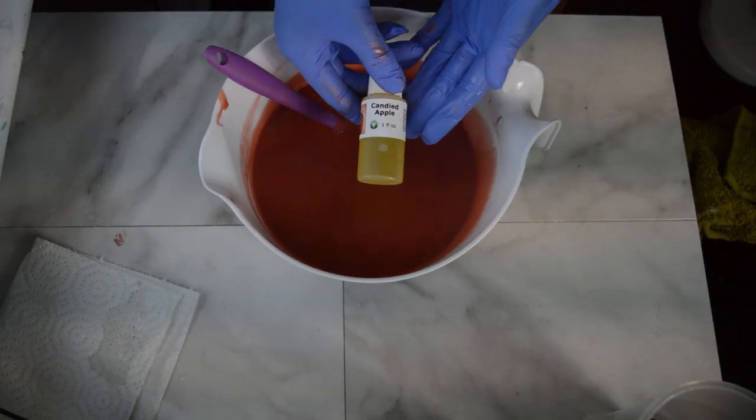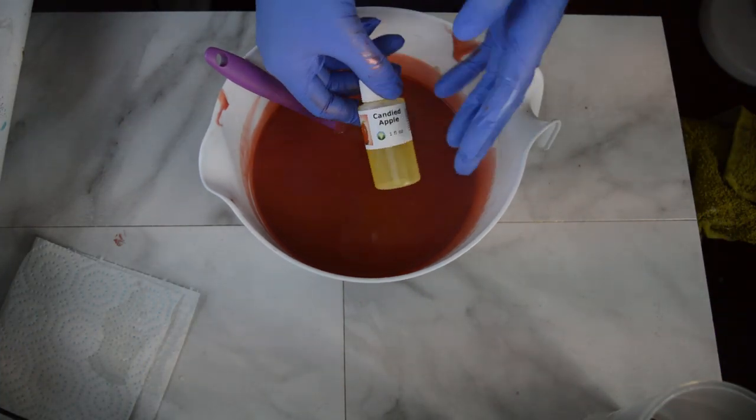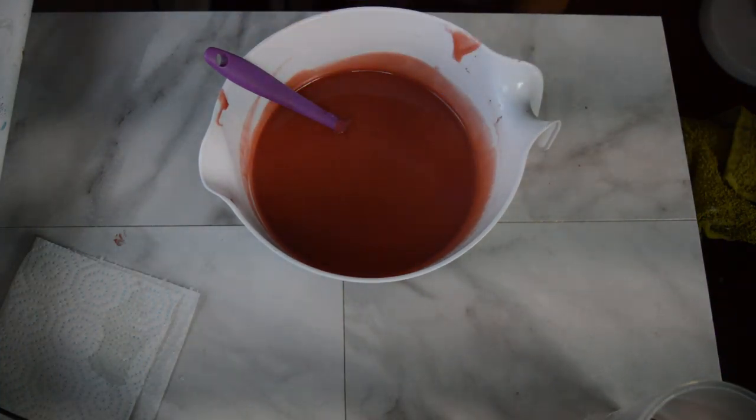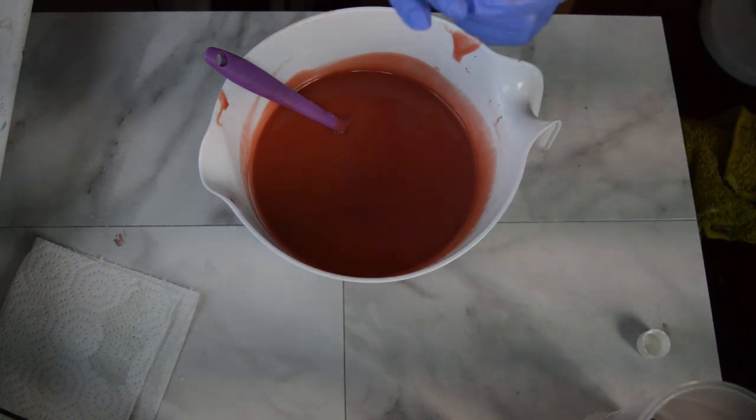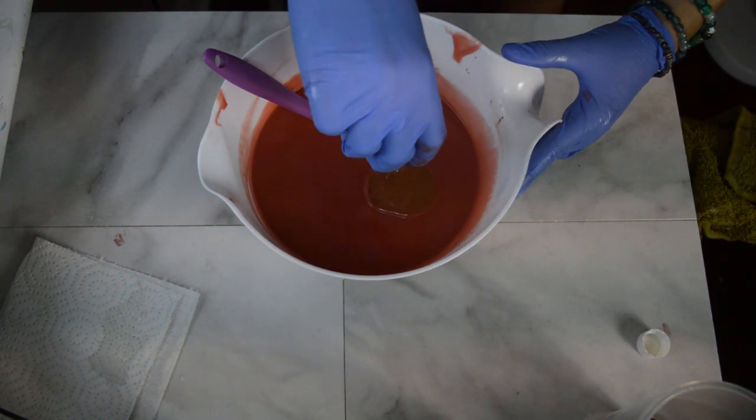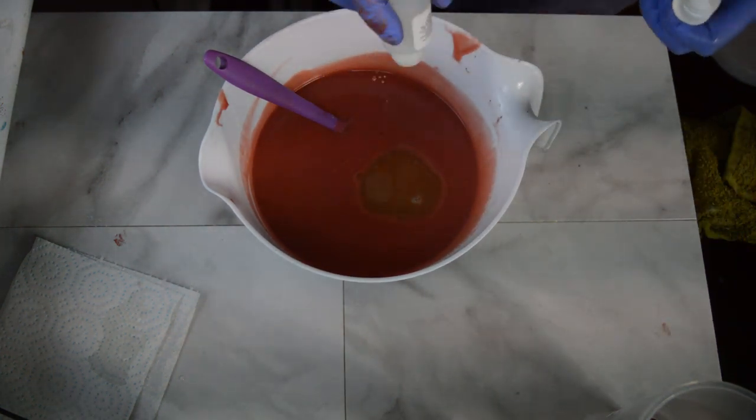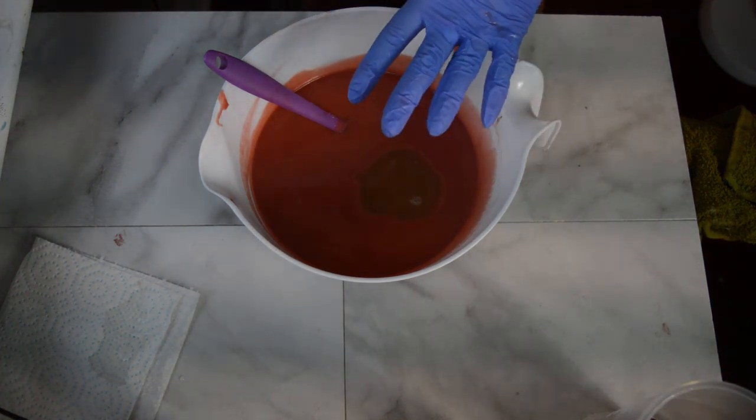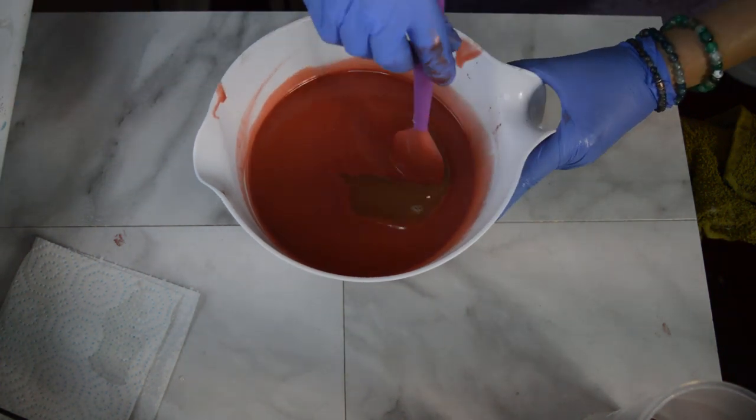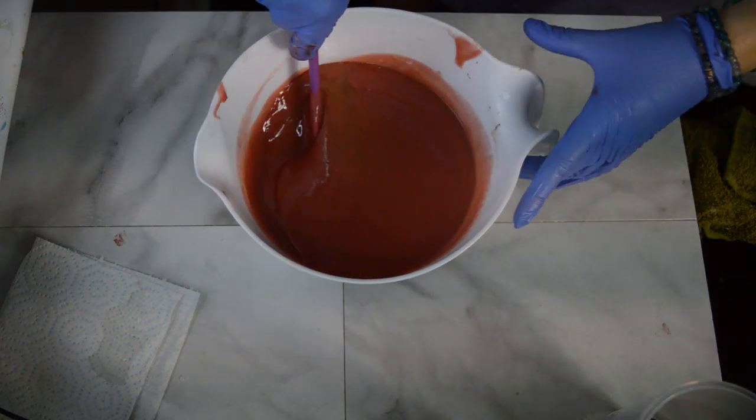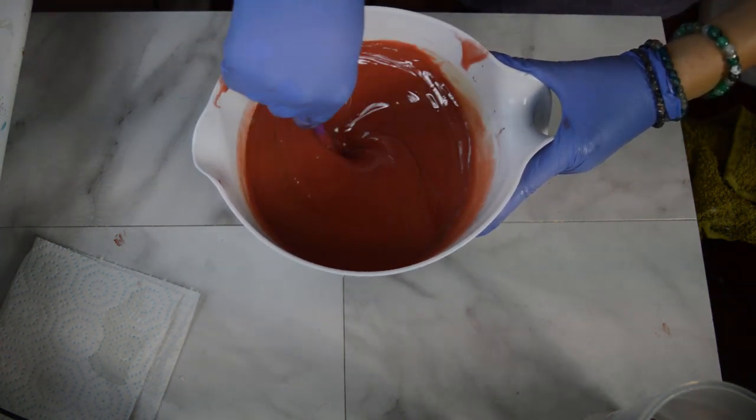The fragrance I picked out for this is called Candied Apple and this is by Nature's Garden and Candle. It does have 1.2% vanillin in it and it does discolor a tiny, tiny little bit like a light tan. But I'm hoping it'll just work with that red, maybe darken it up a little bit, but not turn into a brown soap.